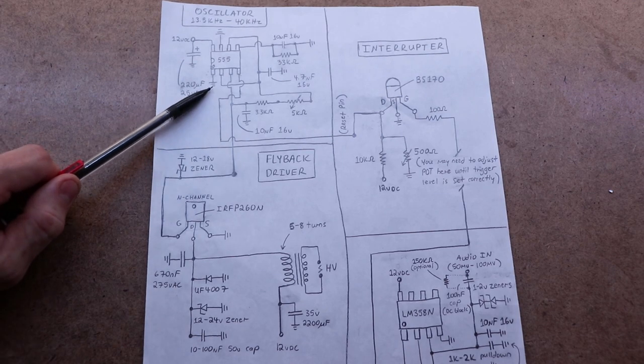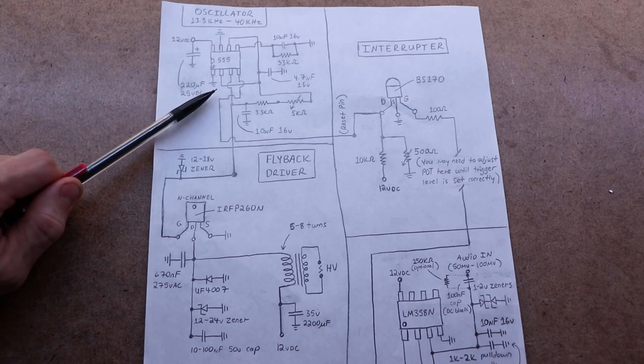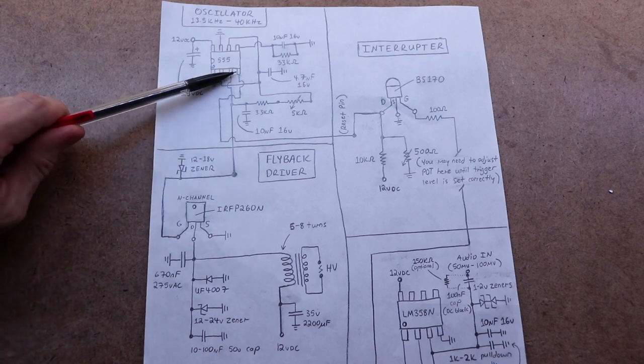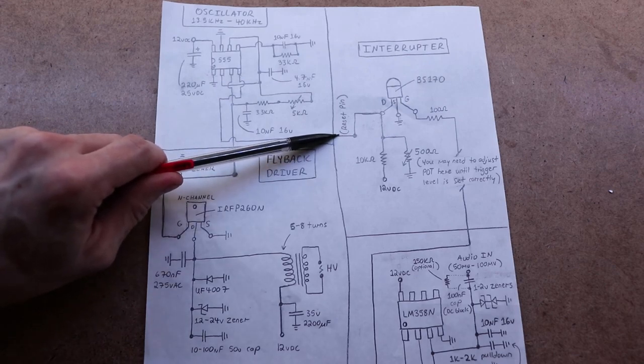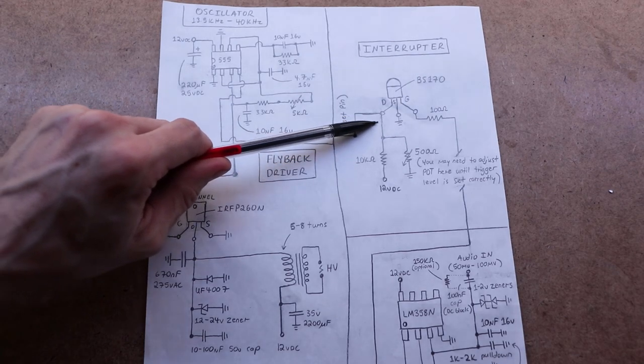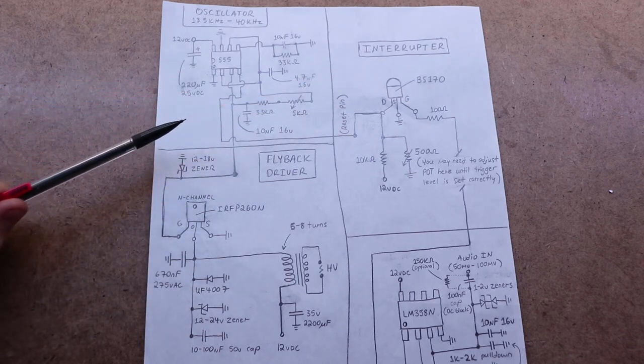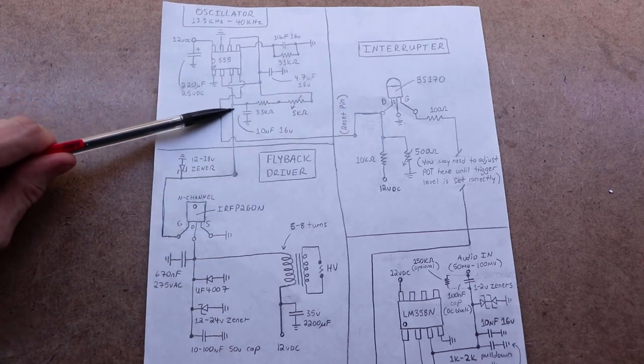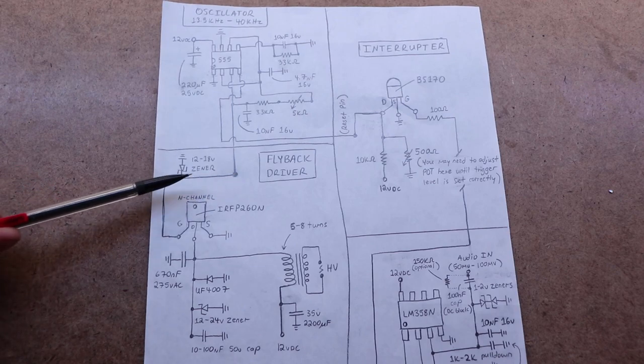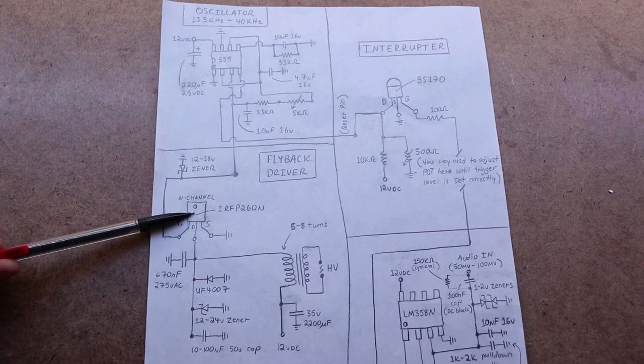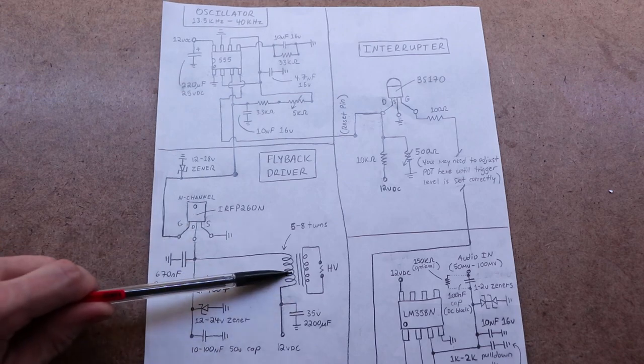This area of the schematic with the 555 timer doesn't change much from Franzoli's schematic, so I'm not going to talk too much about that. But I just want you to notice that there are two lines coming from this section. One of them being the reset pin from the 555 timer, that's really important, that goes to the interrupter. Another line goes straight out here, this is the output of the oscillator itself, which goes to the MOSFET that drives the flyback.